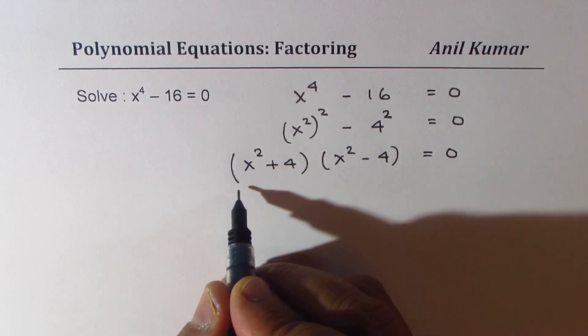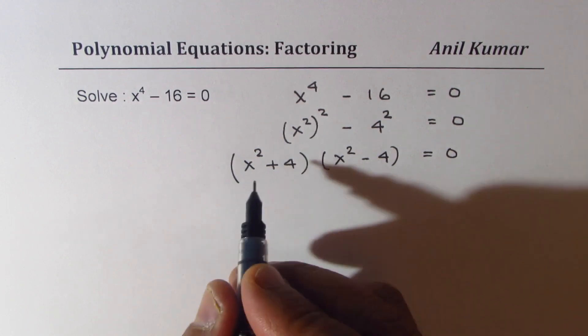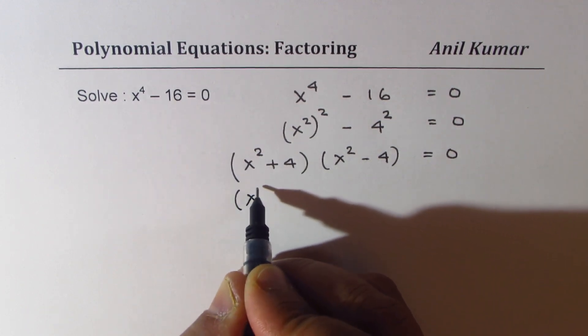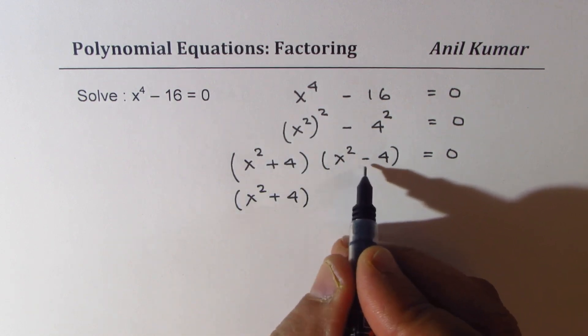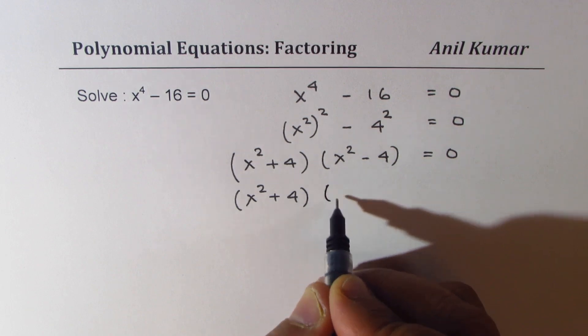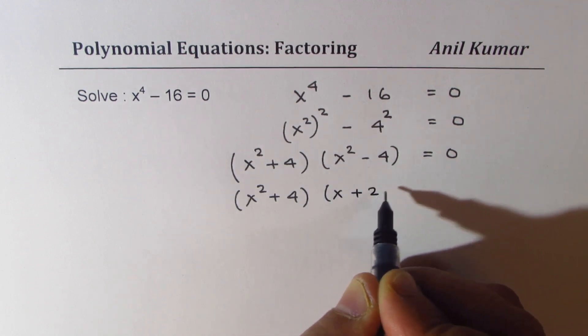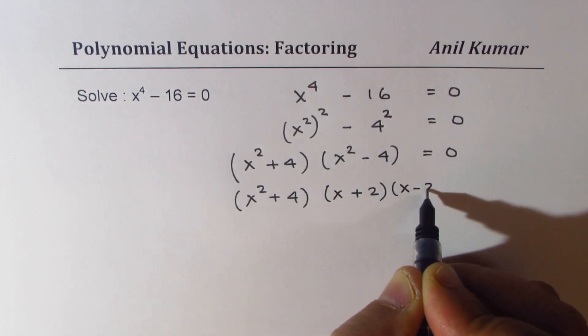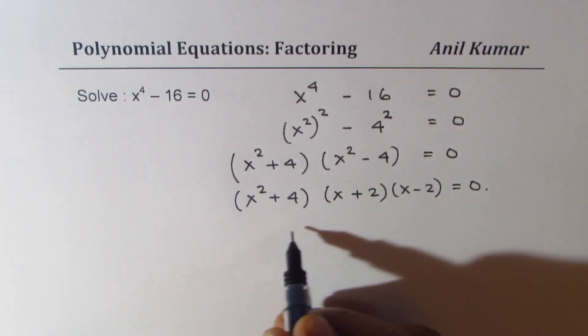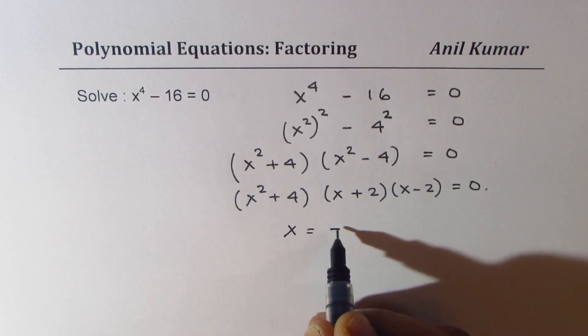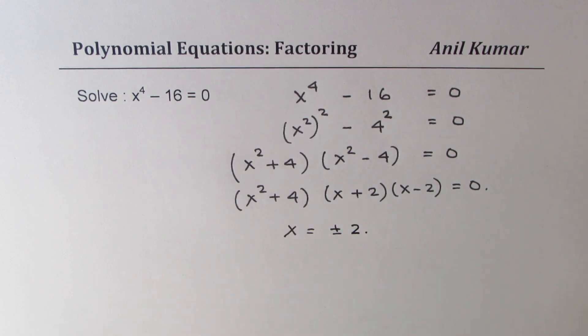x squared plus 4 in the domain of real numbers cannot be factored. So we'll just write it as such. But we could factor x squared minus 4. Again, the difference of squares. We get x plus 2 times x minus 2 equal to 0. So in the domain of real numbers, we get two solutions: x equals to plus minus 2.